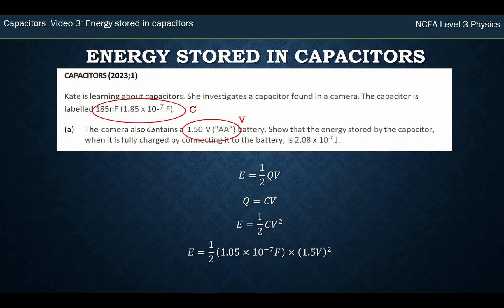So when we put the values in for that, C was 1.85 nanofarads, or 1.85 × 10⁻⁷ farads, and V is 1.5 volts. Make sure that's squared.